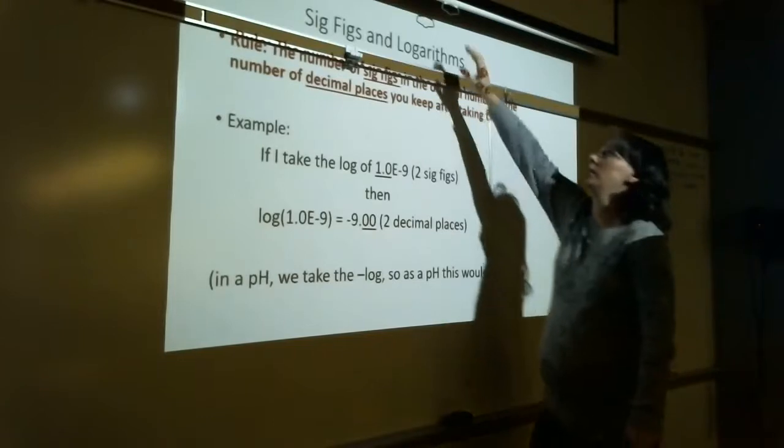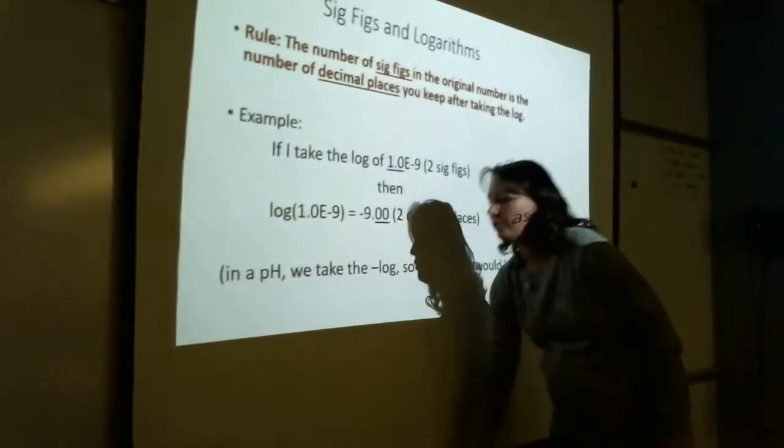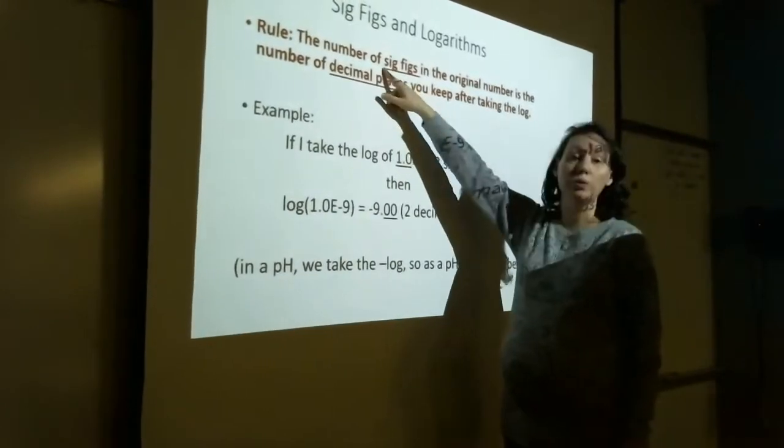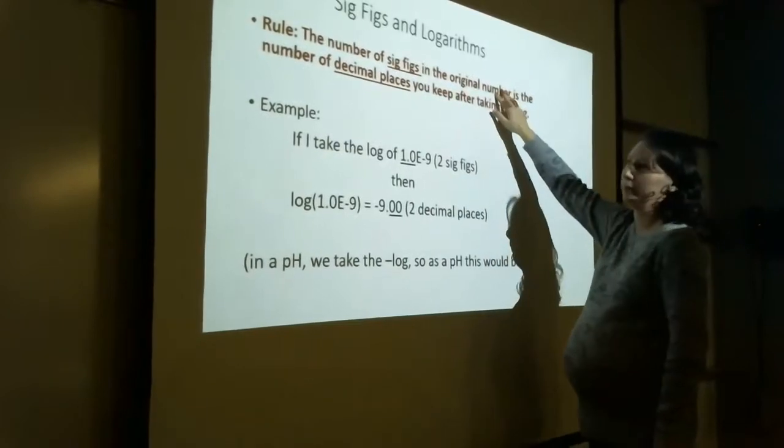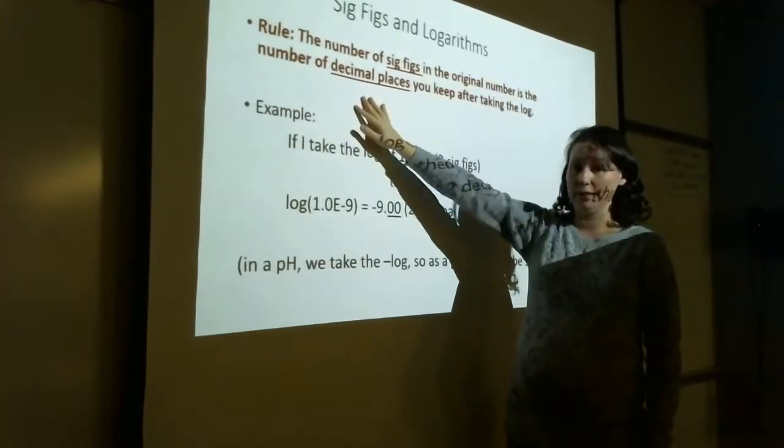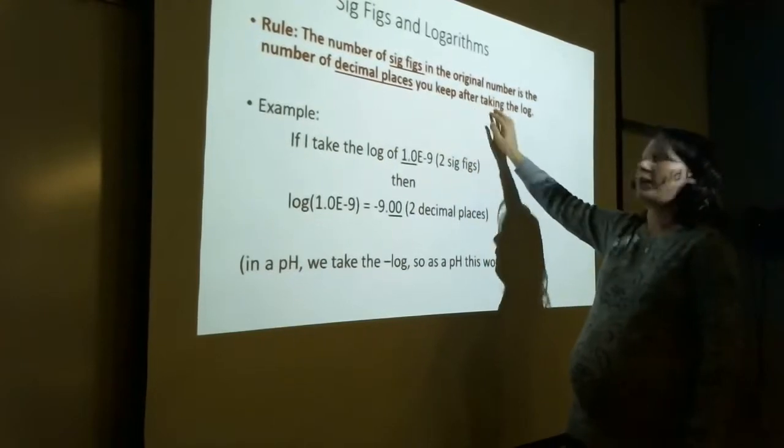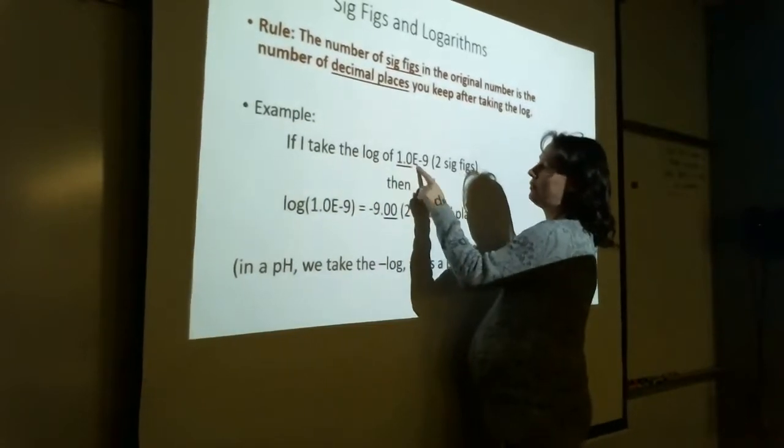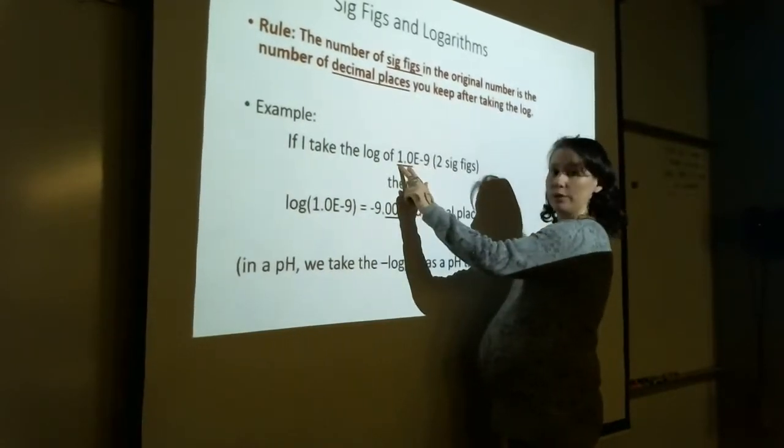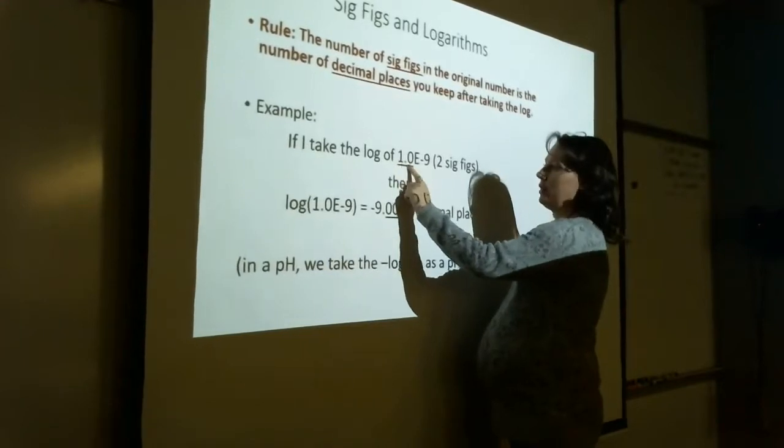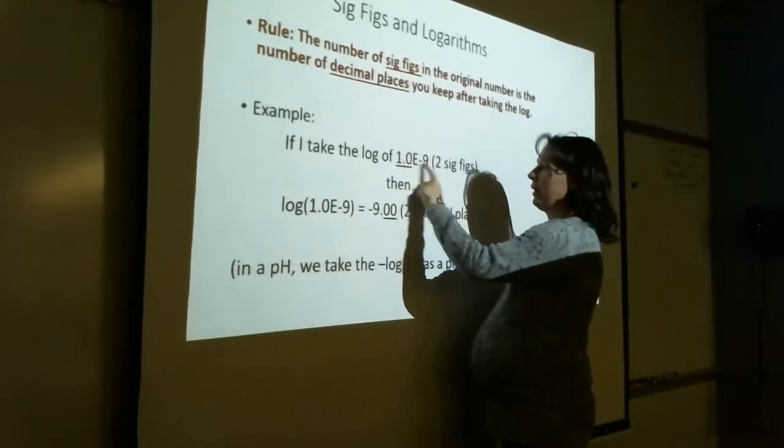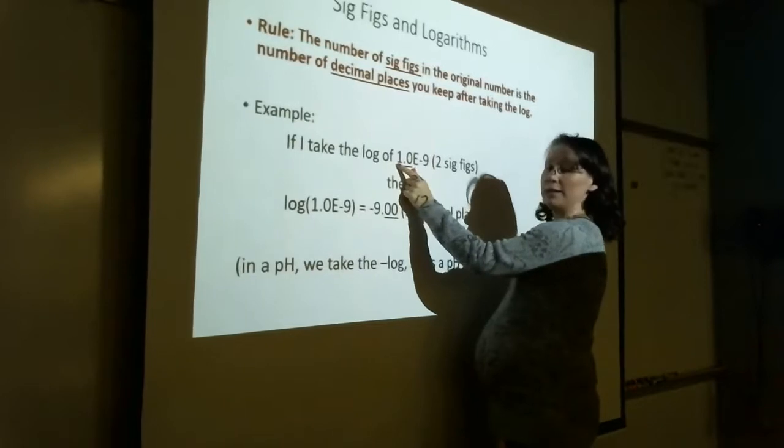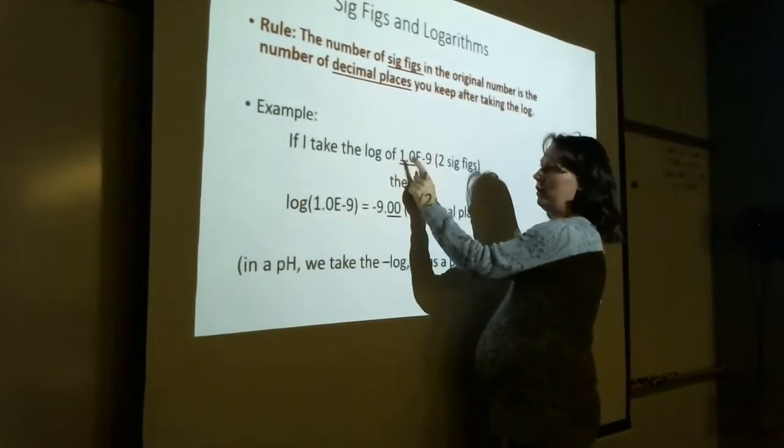Let's go through some examples. Here's the rule: The number of total significant figures in the original number is the number of decimal places you keep after you take the log. For instance, if I have this number 1 times 10 to the negative 9, that number has two sig figs because this zero is significant because of the decimal place. This is not a significant figure—that's just the 10 to the negative 9. So the actual number of sig figs in this number is two significant figures.